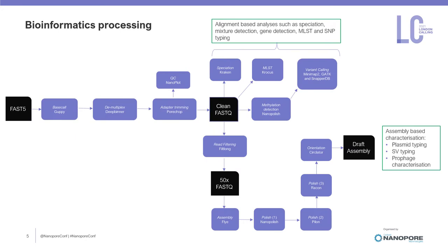Our bioinformatics pipeline starts with base calling and demultiplexing with adaptive trimming, and then splits in two. One arm is alignment-based, deriving information such as virulence gene detection, MLST, and determining relatedness using SNP typing. The other arm is assembly-based characterisation, going through assembly using Flye, then assembly correction, and then we derive information on plasmid content, look for structural variation, and characterize the prophages within the chromosomes.